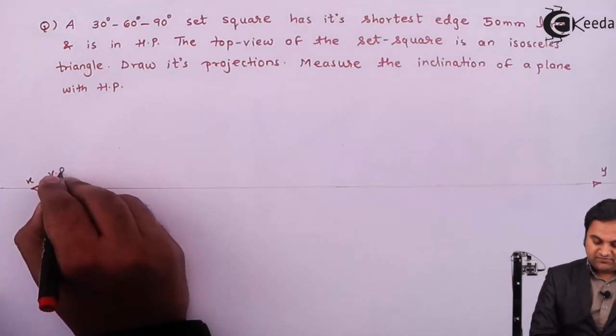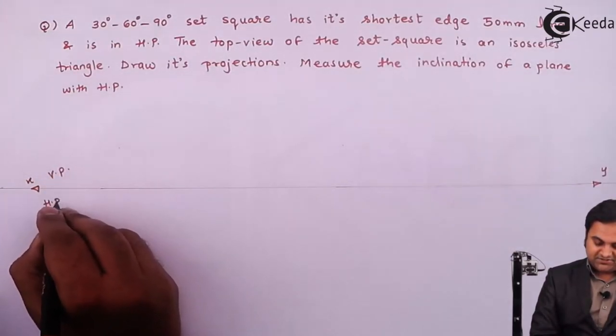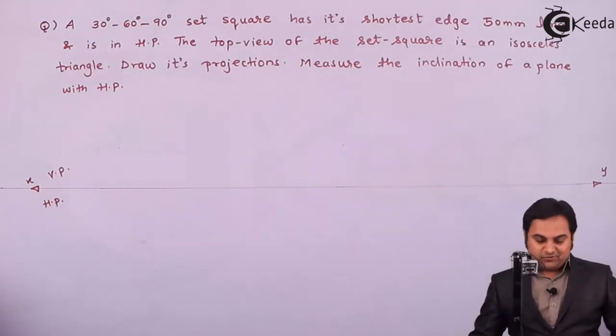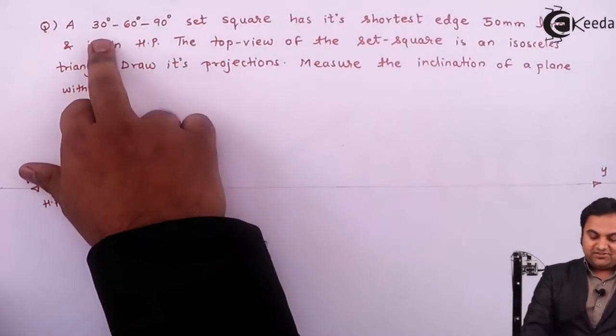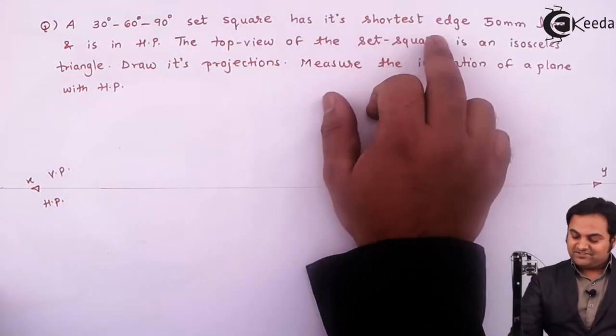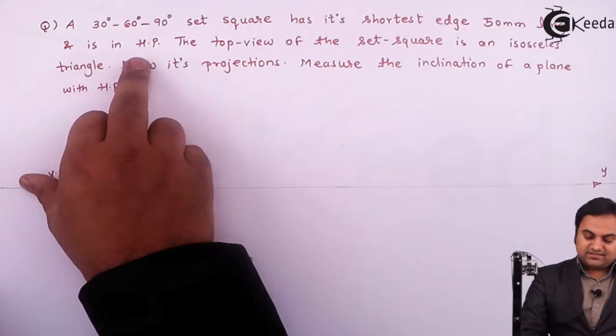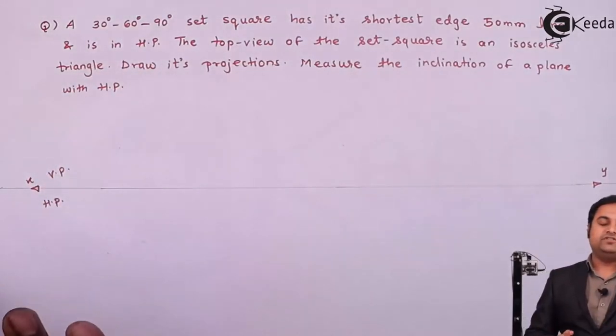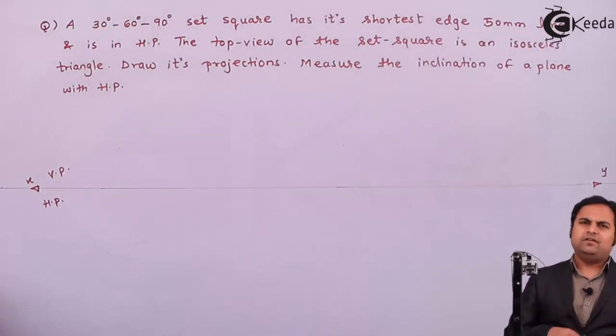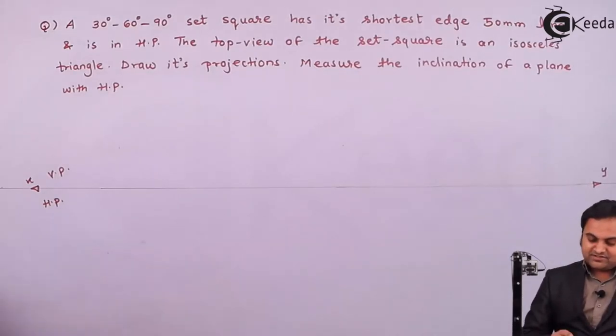Here we have XY line and these are VP and HP. Now the condition is given. A 30-60-90 degree set square has its shortest edge 50mm long and is in HP. So if the shortest edge is 50mm long, shortest edge is in HP, it means the complete set square is in HP.